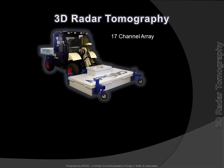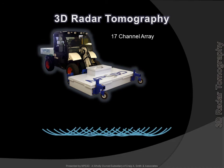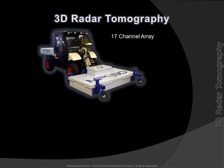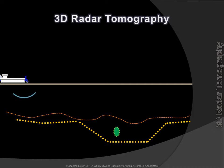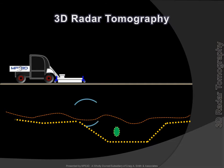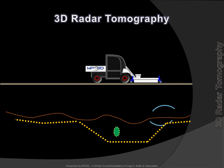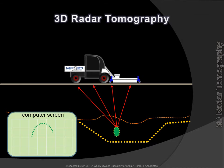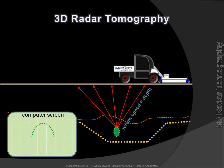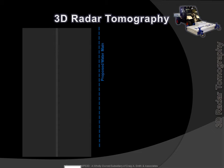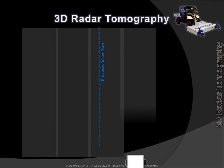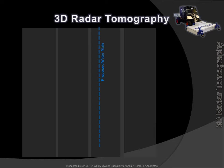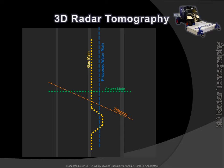Radar tomography utilizes a 17-channel array of radar antennas. Multiple antennas and multiple signals equals incredible precision. Radar tomography provides continuous imaging of subsurface facilities, indicating all changes in elevation and direction with incredible precision. Like aircraft radar, data from the return signals provide information on the target. Note that RT provides full coverage with very few passes. The RT imagery reveals the precise location — horizontally and vertically — of all the subsurface facilities, known and previously unknown, including changes in direction.